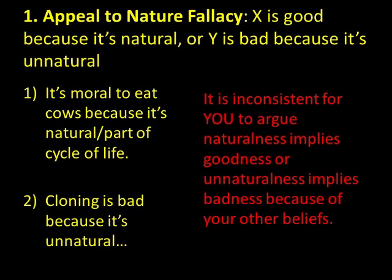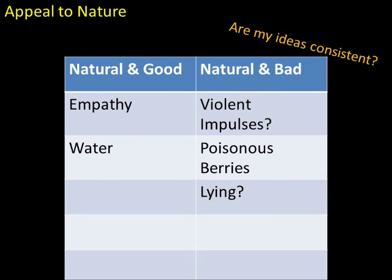Another example: some people argue homosexuality is immoral because it's unnatural. And somebody being silly might argue it's okay to throw poo or to steal because they saw monkeys doing it in the zoo. Even if we could prove the naturalness of eating meat, it would not necessarily be right. Some biologists believe humans evolved natural predispositions towards rape, aggression, and xenophobia, but it doesn't follow that they think it's morally good to act on those tendencies.